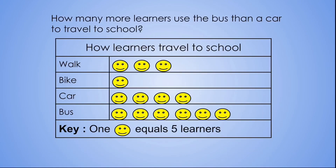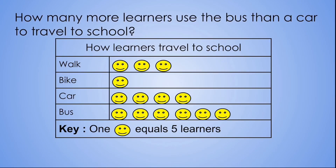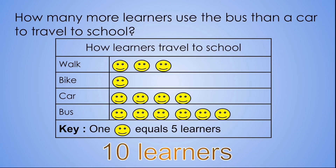Let's take a look at our last question. How many more learners use the bus than a car to travel to school? Let's look at the car row and the bus row. How many more smiley faces are in the bus row than in the car row? That's right — two smiley faces. But remember one smiley face equals five. Let's count together: five, ten. Therefore there are ten more learners that use the bus to travel to school than the car.